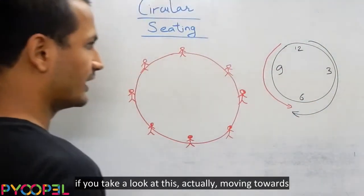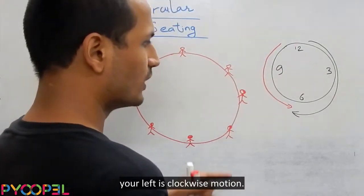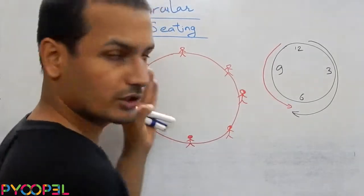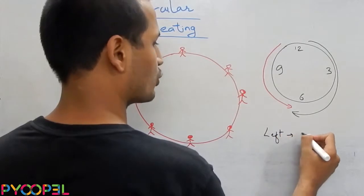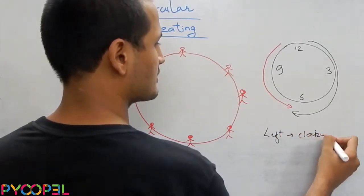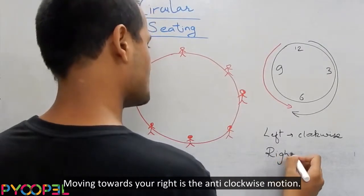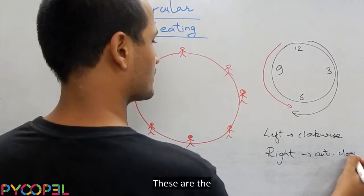So, if you take a look at this, actually moving towards your left is clockwise motion. Moving towards your right is the anticlockwise motion.